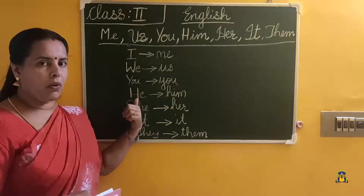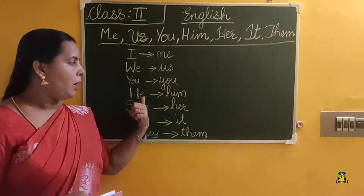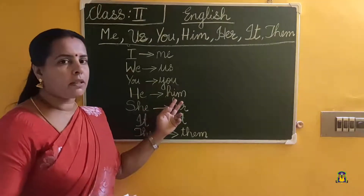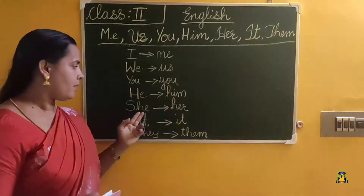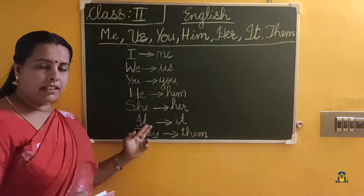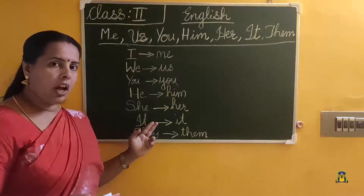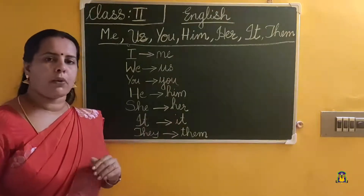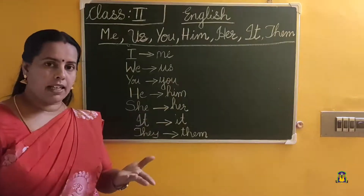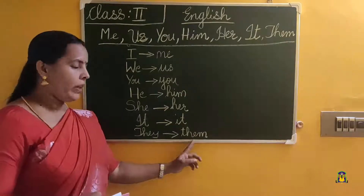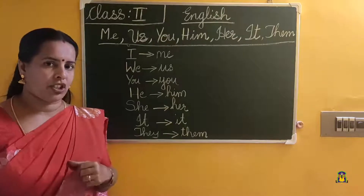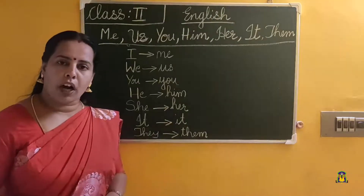For he, he is used in the place of a man or a boy. When a man or a boy receives an action, we use the object pronoun him. For she, we use her. For it, it is used for animals or things — the object pronoun is it itself. For they — plural — we use them as the object pronoun. When they receive an action, we use them.